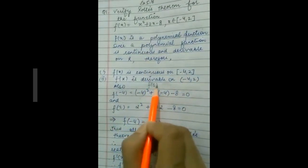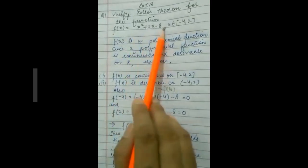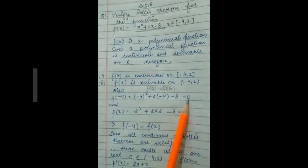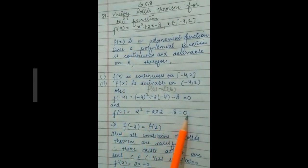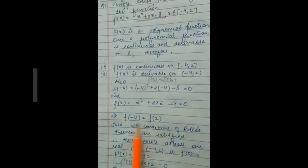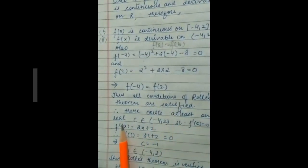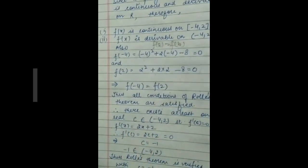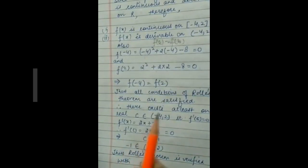The third condition requires f(a) = f(b). Here a = −4, so f(−4) = (−4)² + 2(−4) − 8 = 0. Similarly f(2) = (2)² + 2(2) − 8 = 0. Therefore f(−4) = f(2), and all conditions of Rolle's Theorem are satisfied. Hence there exists at least one real c belonging to (−4, 2) such that f'(c) = 0.